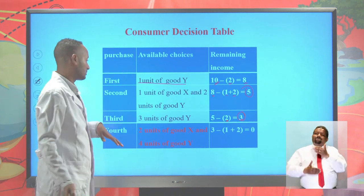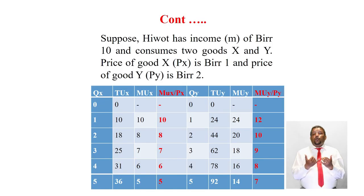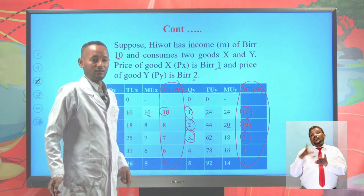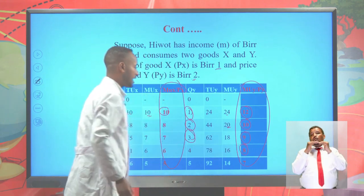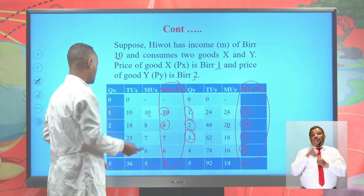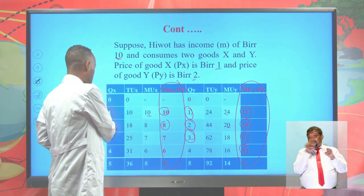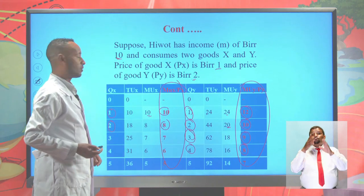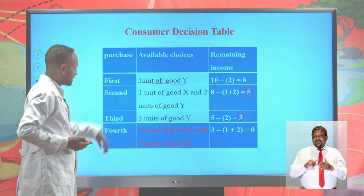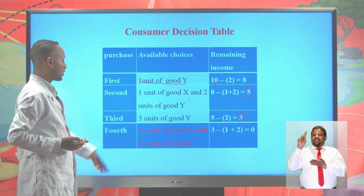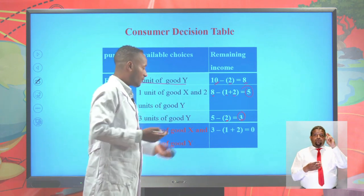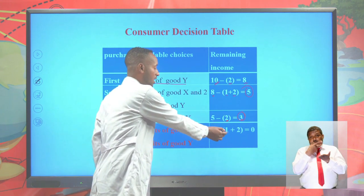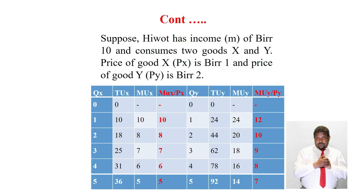In the next purchase, remaining MUx/Px are 8, 7, 6, 5 and remaining MUy/Py are 8, 7. She gets equal MU per price = 8: this means she should buy 2 units of good X and 4 units of good Y. Remaining income from the previous purchase is 3 Birr. The price of X is 1 Birr and price of Y is 2 Birr: 1×1 + 2×1 = 3 Birr. Her pockets are now empty — income is exhausted.